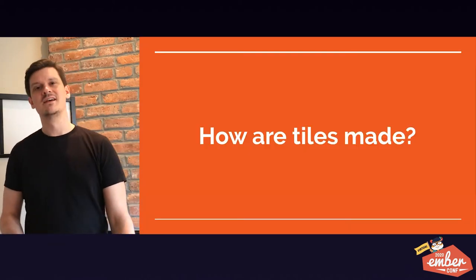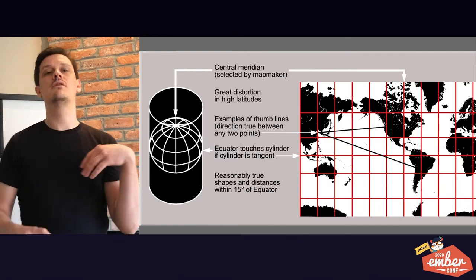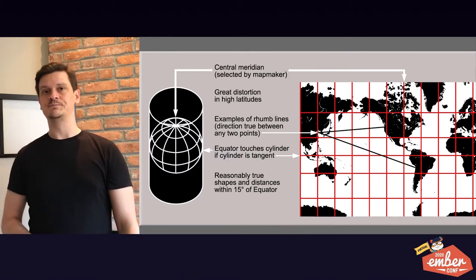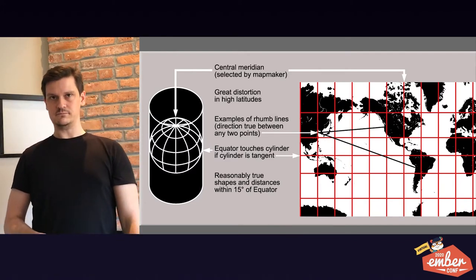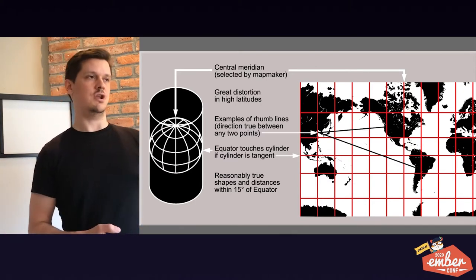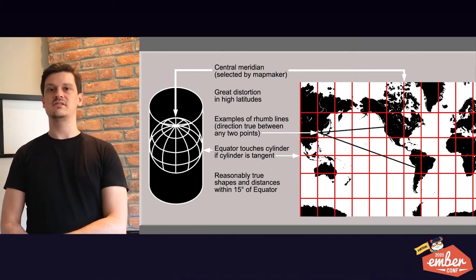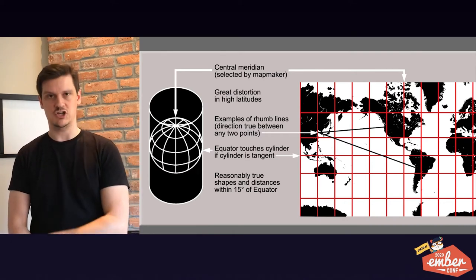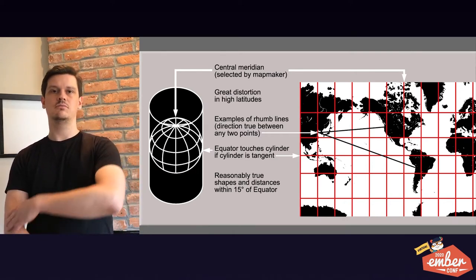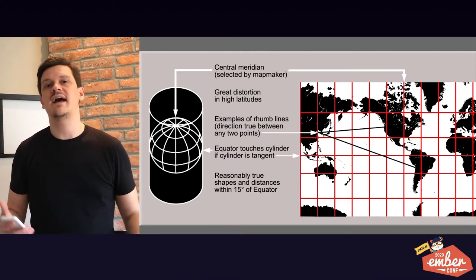How are tiles made? Through a cylindrical map projection, we're able to project a globe onto a flat surface. This leads to obvious distortion — you can all remember middle school geography class. There are lots of different ways of projecting things, but for our purposes we use a projection called Web Mercator.